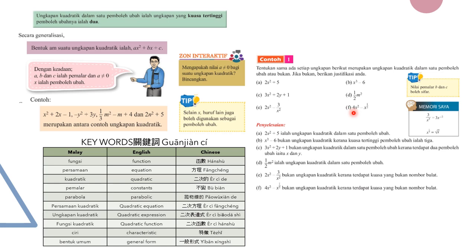Part F is also not a quadratic expression because it contains x to the power of one-half, which is not a whole number. In summary: A is quadratic; B is not — highest power is 3; C is not — more than one variable; D is quadratic — highest power of m is 2; E is not — power is not a whole number; F is not — same reason as E.